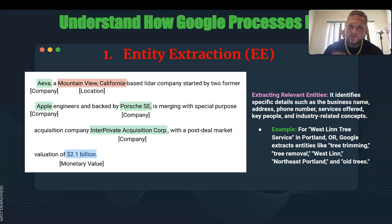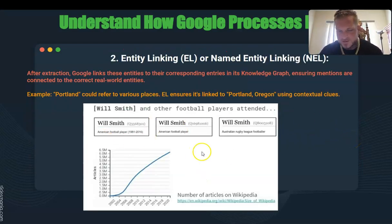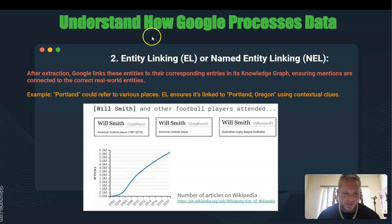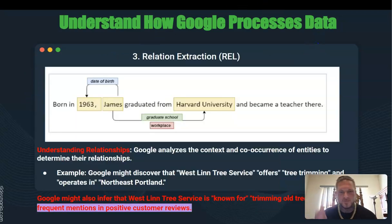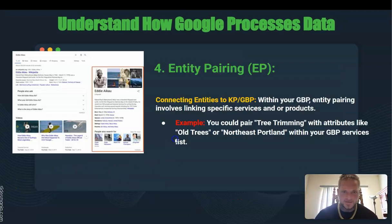Google doesn't read the entire page — it pulls things called entities out of that page. Then it goes through something called entity linking. In this example, we have Will Smith — it needs to find the right Will Smith. Is it the actor, the rugby player, or the football player? Next is relation extraction, which looks at keywords around that entity to find its relationship.